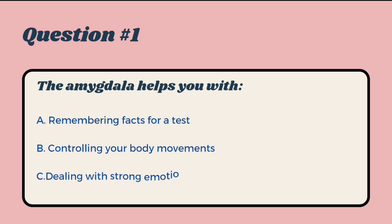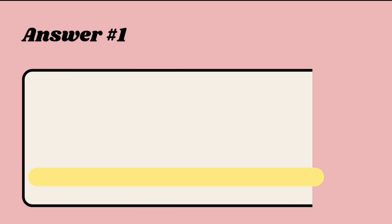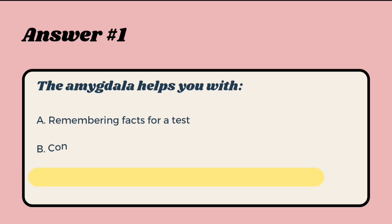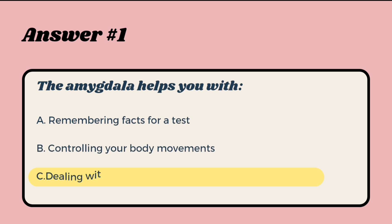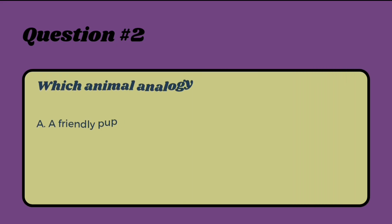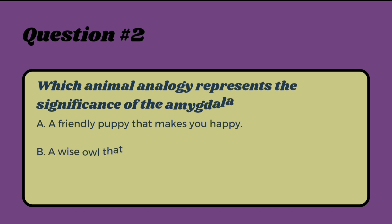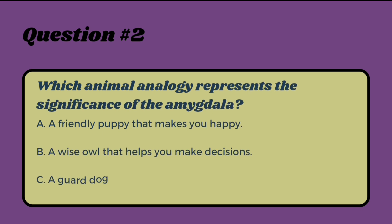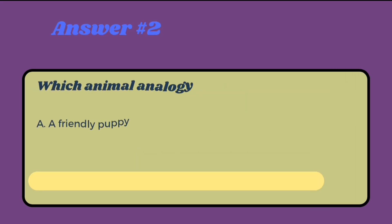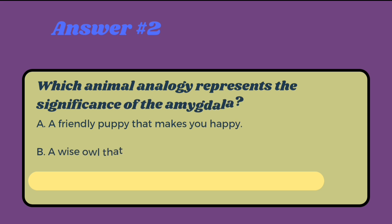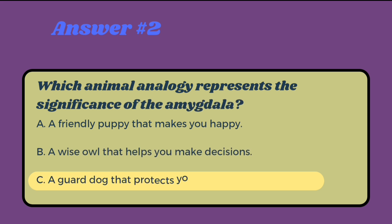The amygdala helps us respond to dangerous situations. Question: the amygdala helps you with — remembering facts for a test, controlling your body movements, or dealing with strong emotions like fear and excitement? The answer is that the amygdala helps you with dealing with strong emotions like fear and excitement. The animal analogy representing the amygdala is a guard dog that protects you from any danger.